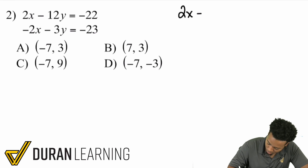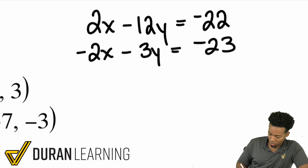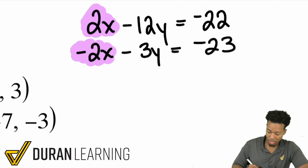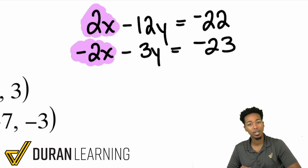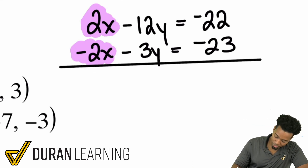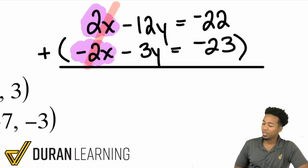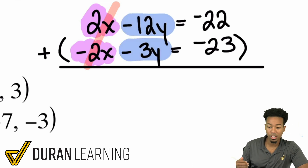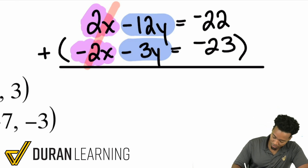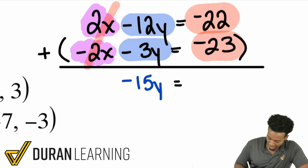So we have 2x minus 12y equals negative 22, and negative 2x minus 3y equals negative 23. If you take a look at these equations, notice positive 2x and negative 2x. If I were to add these equations together, I would eliminate that x variable, leaving me with just y — and that's exactly what I want. Let's add these equations together. That x variable eliminates, and then we have negative 12y minus 3y. A negative 12 plus a negative 3 is the same as negative 12 minus 3, which is negative 15 — so negative 15y. Then negative 22 and negative 23 added together is negative 45.